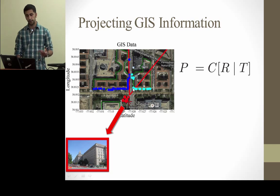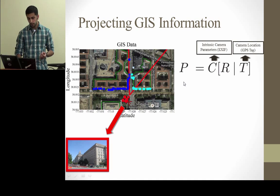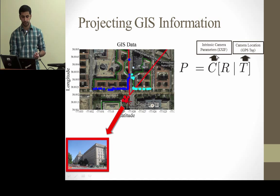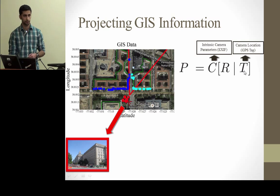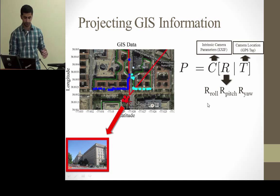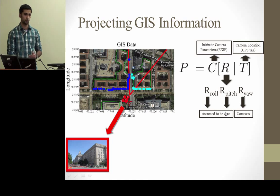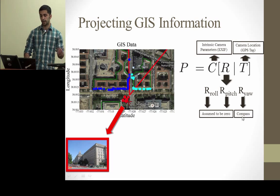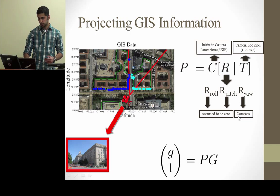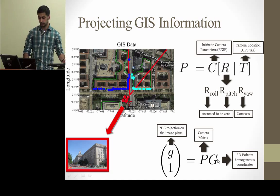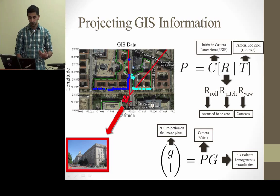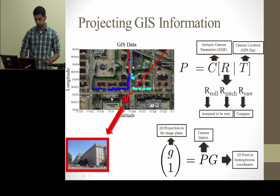To see where these objects should appear, we form the camera matrix P, which consists of: C, the intrinsic camera parameters computed from the EXIF tag of the image; T, the translation computed from the GPS tag; and R, the rotation around the three main axes X, Y, and Z — called roll, pitch, and yaw. We assume roll and pitch are zero, which is reasonable for most images, and yaw is obtained from the camera compass. Once we form the camera matrix, we can project any 3D point from GIS databases onto the 2D image plane.